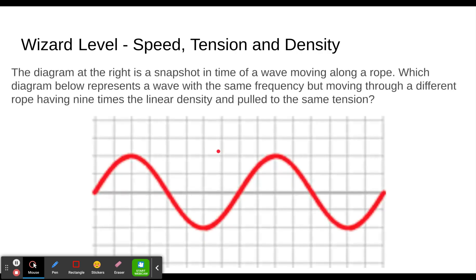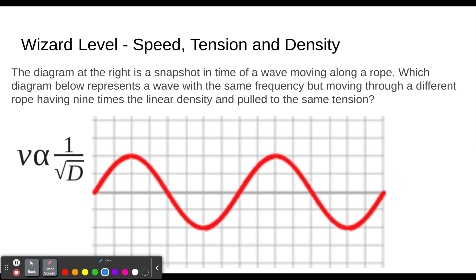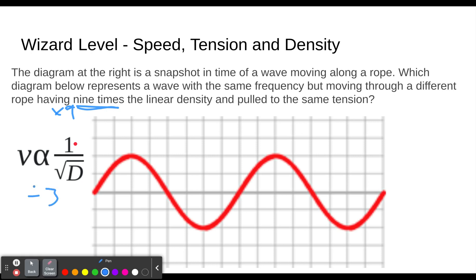Let's put that into practice. The diagram at the right is a snapshot in time of a wave moving along a rope. Which diagram represents the wave with the same frequency but moving through a different rope having nine times the linear density and being pulled to the same tension? Since linear density is the inverse square-root relationship and it's nine times bigger, we take the square root of nine (which is three) and go in the opposite direction — so velocity gets three times smaller, and therefore the wavelength is three times smaller.